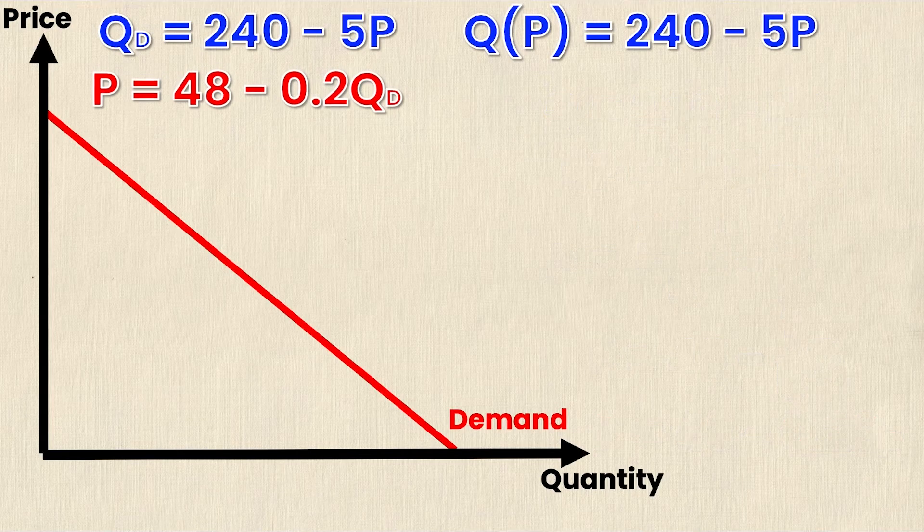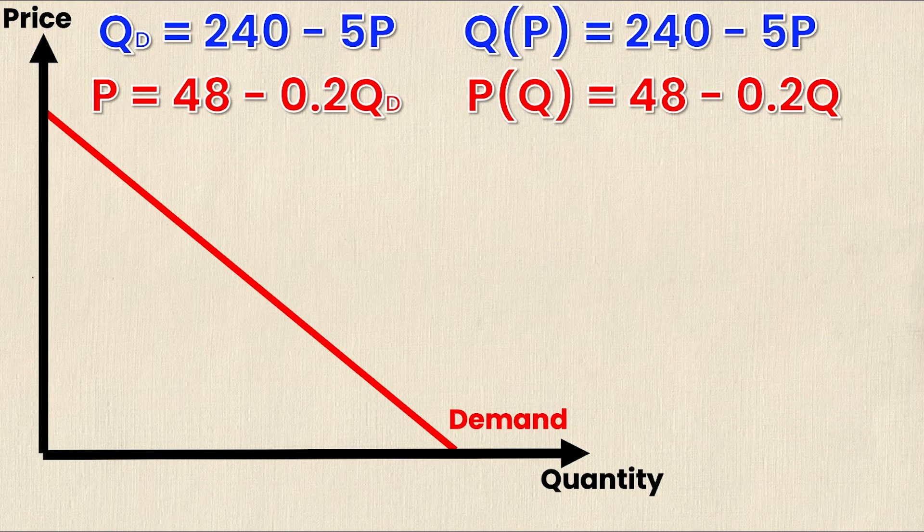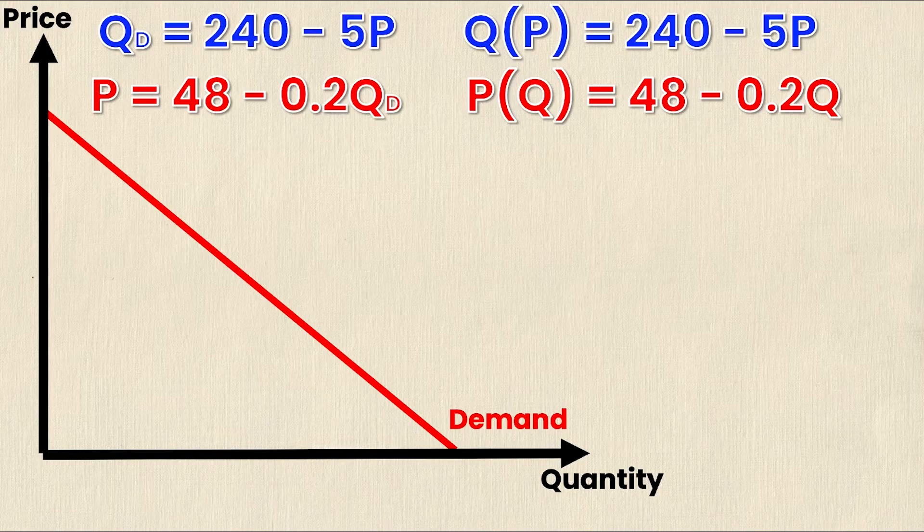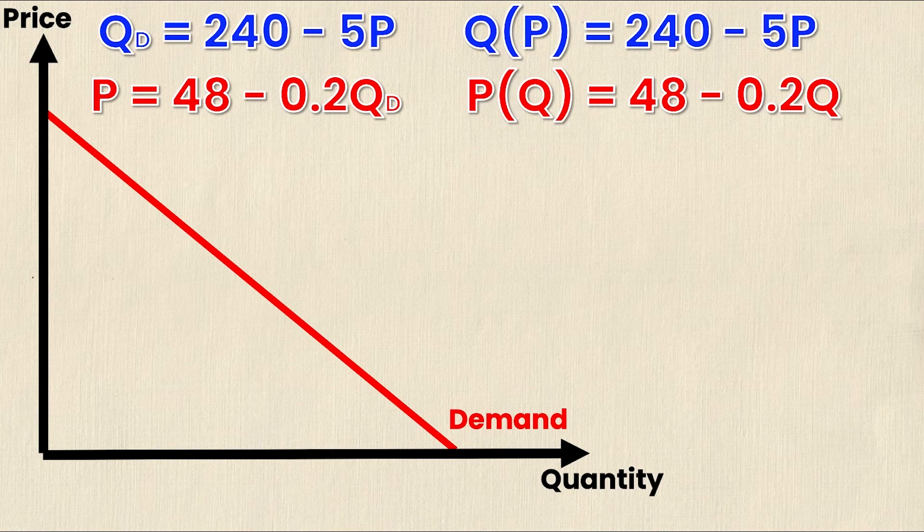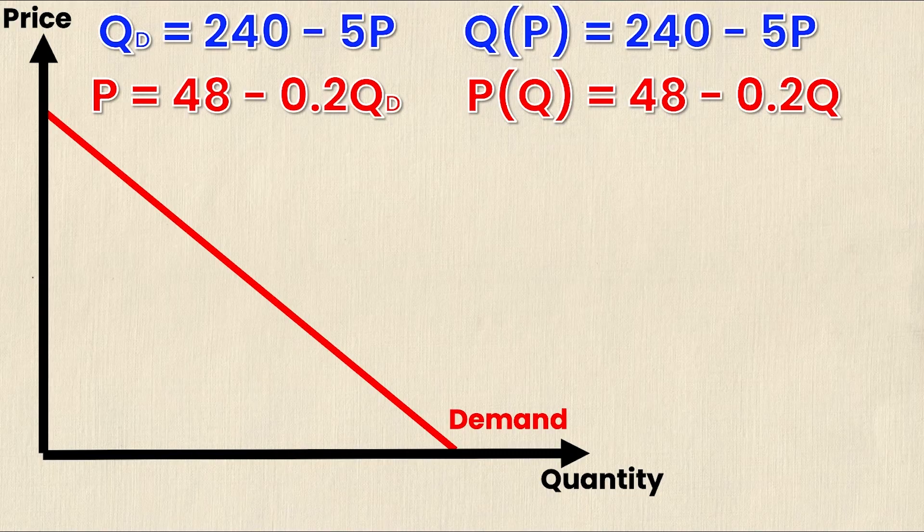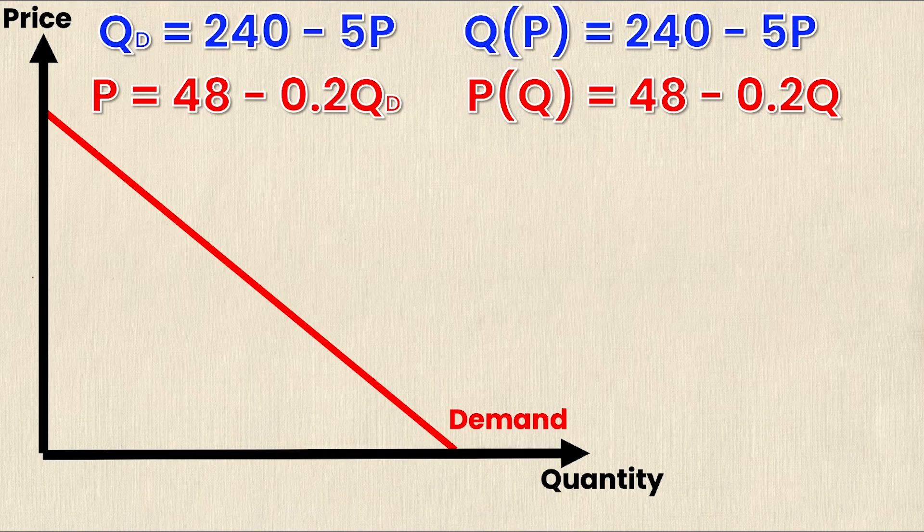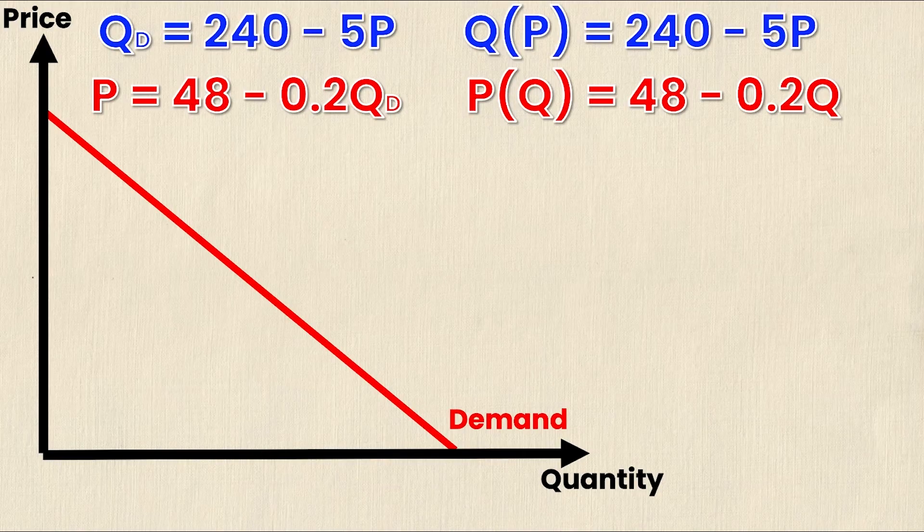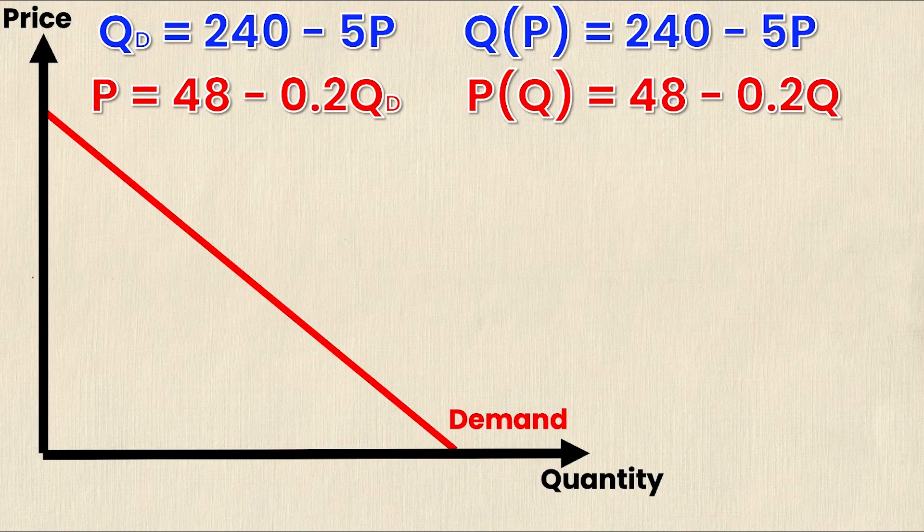If I wanted to write that in functional notation, I would have P(Q) equals 48 minus 0.2Q. That's simply saying that P now depends on quantity, or price depends on the quantity demanded. The general form of the equation of a line is y equals mx plus b. In this case, the y variable is price on the y-axis, and the x variable is quantity on the x-axis.